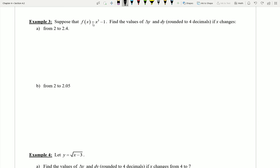Suppose that I'm working with the function x cubed minus one and I want to find the values of delta y and of dy, rounded to four decimal places, if x changes from the value of 2 to 2.4.